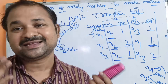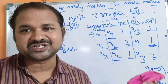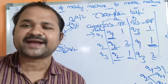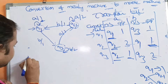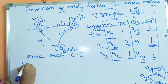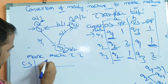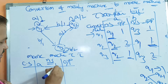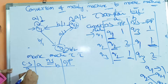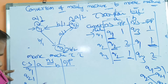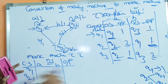Now let us construct the Moore machine transition table based on the Mealy machine transition table. The table has columns for current state, next state for inputs a and b, and output. The states are Q1, Q2-1, Q2-2, Q3-1, and Q3-2.